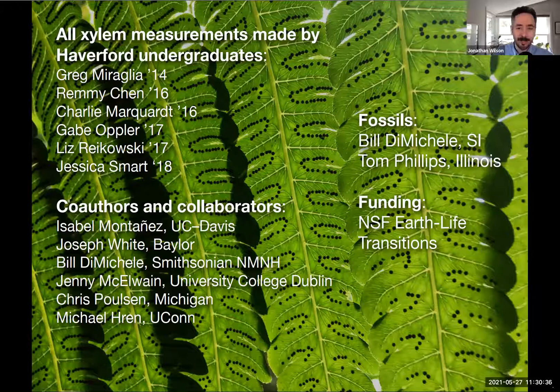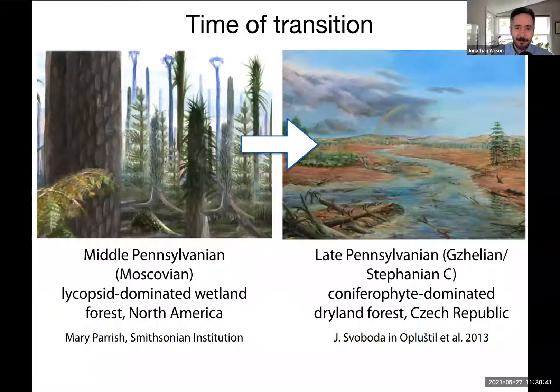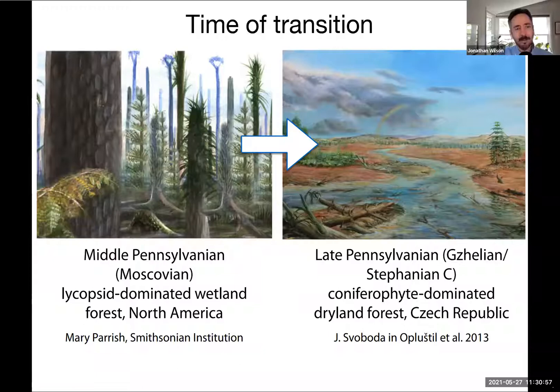We all know, after several days of talking about this, that the Casamovian is a well-documented transition in the Earth's system. We've seen many presentations across the terrestrial and marine realms, and workers in the terrestrial realms have recognized these differences for quite some time. And effectively, one of the questions we've all been asking is, how do we get from the left image on this slide to the right image?